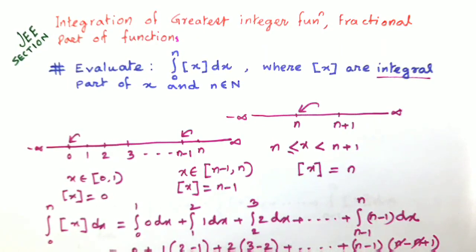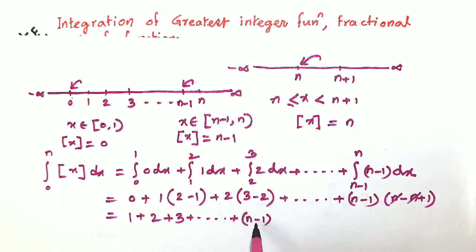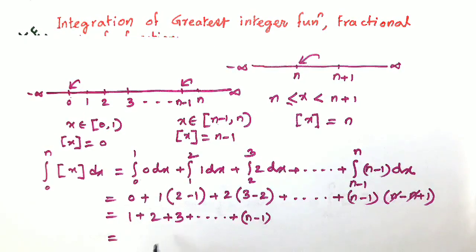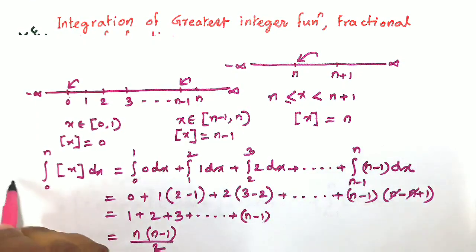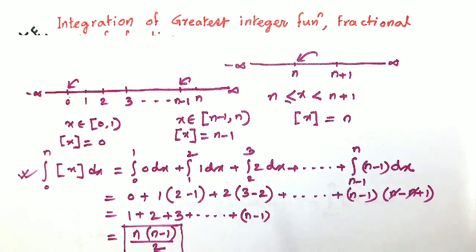Finally, we get 1 times 1 equals 1, plus 2 times 1 equals 2, plus 3, and continuing, with the last term being n minus 1. This is the sum 1 plus 2 plus 3 plus dot dot dot plus n minus 1, which is the sum of the first n minus 1 natural numbers. The sum equals n times (n minus 1) divided by 2. So the integration from 0 to n of the integral part of x dx equals n(n minus 1) divided by 2.